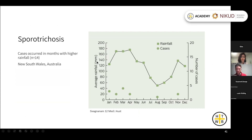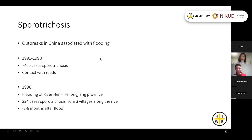For sporotrichosis, there is evidence that cases occur more often in months with higher rainfall, with some data from a small number of patients in Australia. There have also been outbreaks associated with flooding in China — more than 400 cases in the early 1990s, and with flooding of the River Nen in 1998 there were again over 200 cases, all presenting around three to six months after the flooding.